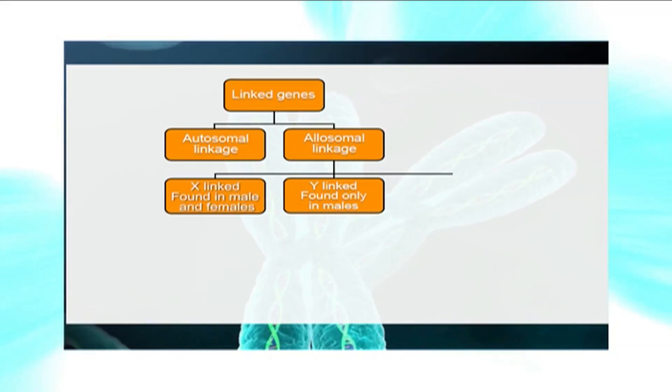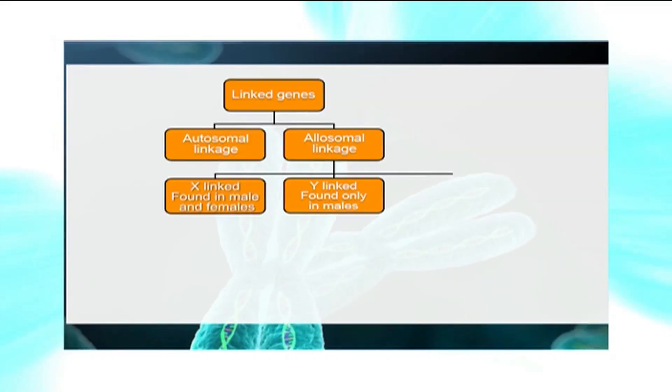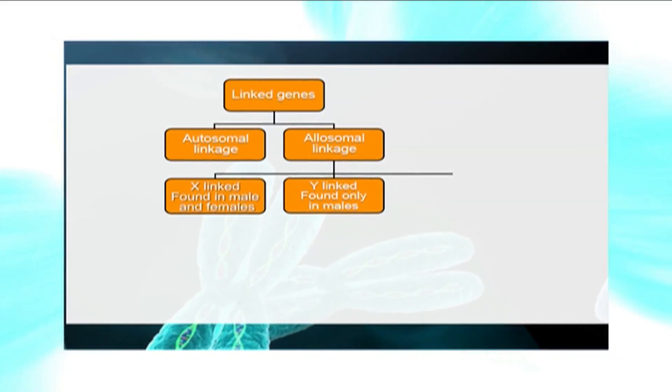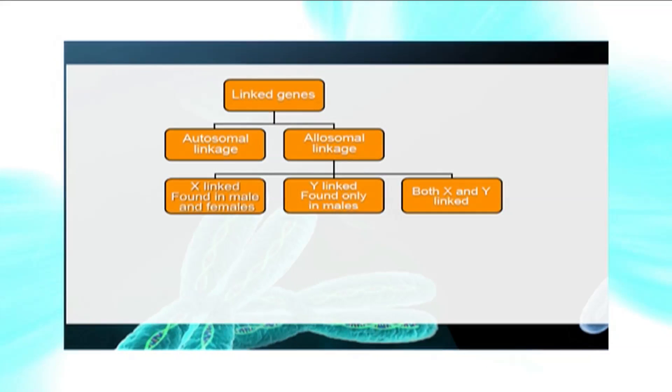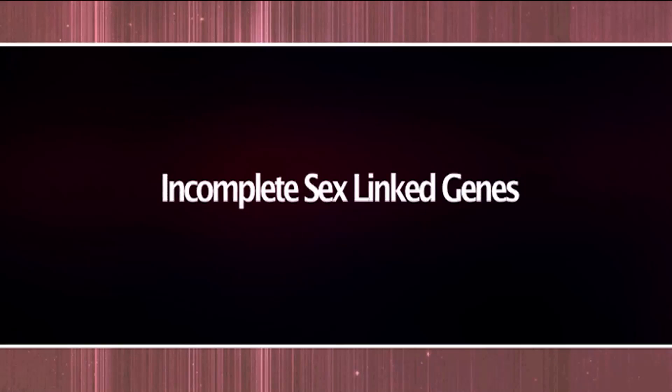There is another type for genes located on Y chromosomes, called Y-linked genes or holandric genes. Since only men have a Y chromosome, only men will show Y linkage. The last type of linkage is found to occur in both X and Y chromosomes; such genes are called incomplete sex-linked genes. Now let us discuss them in broader terms.